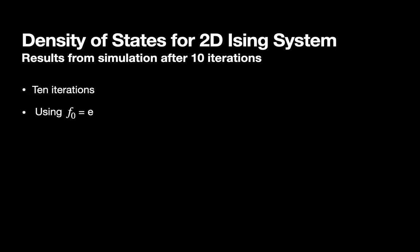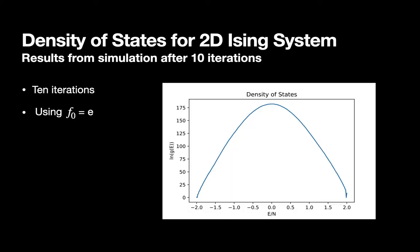After fixing the ground state value to the analytical value, our density of states comes to this, which matches fairly well with the analytical result.